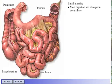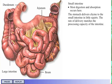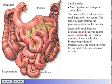Most digestion and absorption occur in the small intestine. The stomach delivers chyme to the small intestine in little squirts, and the rate of delivery matches the processing capacity of the intestine. Juices in the small intestine neutralize the acidic chyme, restore normal osmolarity, and continue digestion of macromolecules.